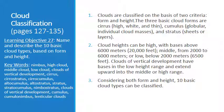The content in this presentation is covered on pages 127 through 135 of your textbook, and it's meant to help you achieve learning objective number 27, which is to name and describe the 10 basic cloud types based on form and height, and to compare and contrast nimbus, stratus, and cumulonimbus clouds and their associated weather. Be sure to skim pages 127 through 135 before watching this video, and also be sure to read the chapter carefully before attempting the online quizzes.